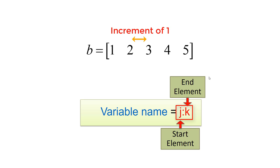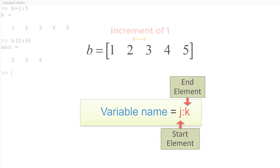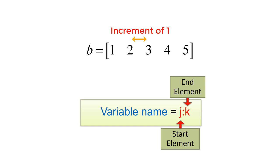To create a 1 by 5 row vector B having 1 to 5 with increment of 1, you can use the colon operator. The syntax 'J:K' generates a row vector from J to K with increment of 1. Type 'B = 1:5' to create row vector B. You can also use the colon operator for indexing — for example, 'B(2:4)' accesses the second to fourth elements. The colon operator is very important in Octave/MATLAB and will be reused for various applications.